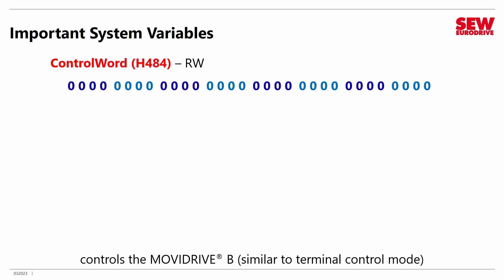Here's another handy one: ControlWord, found in H484. It is a read-write location, which means you can read the bits or change them. If you manipulate this word, it's sort of like running the MoviDrive B in terminal control mode. When you took the MoviDrive B Intermediate class, one of the sessions showed you how to control the drive in what's called binary mode or terminal control mode. This is sort of like doing that same thing in software by flipping bits instead of changing I/O signals from high to low and low to high.